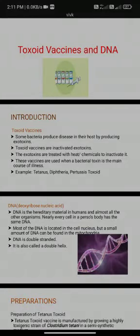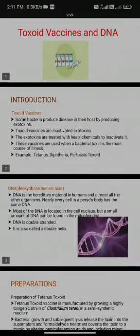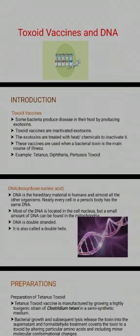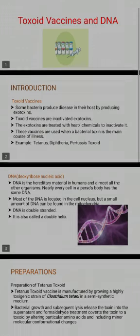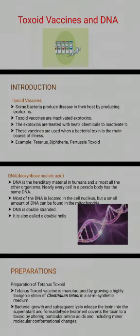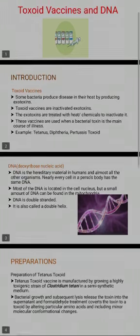Toxoid Vaccines. Some bacteria produce disease in their host by producing exotoxins. Toxoid vaccines are inactivated exotoxins. The exotoxins are treated with heat or chemicals to inactivate them. These vaccines are used when a bacterial toxin is the main cause of illness.